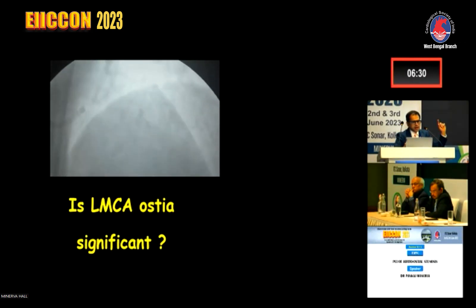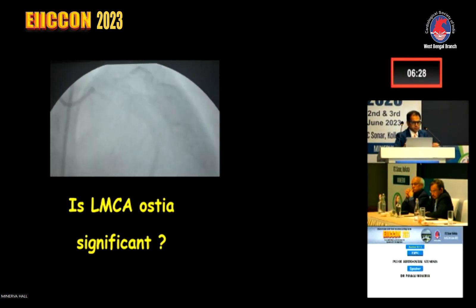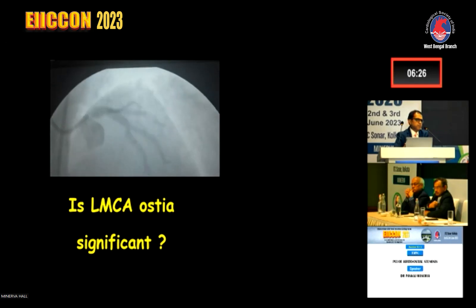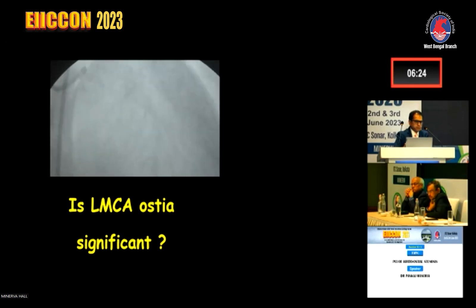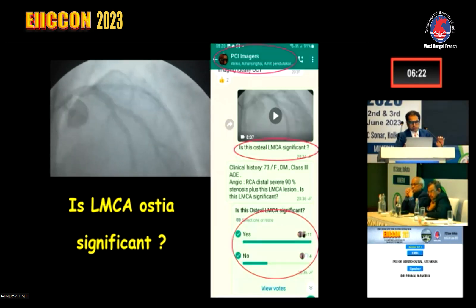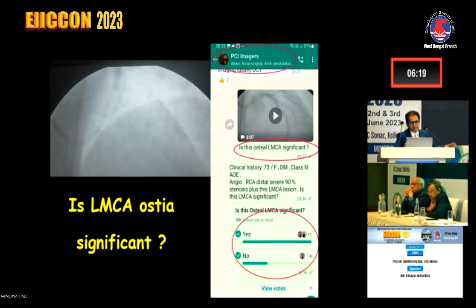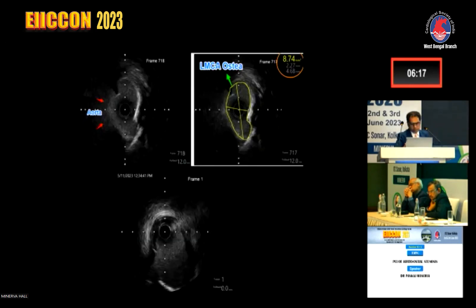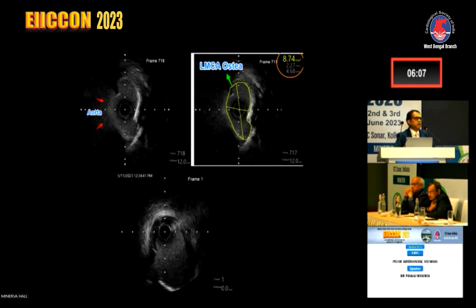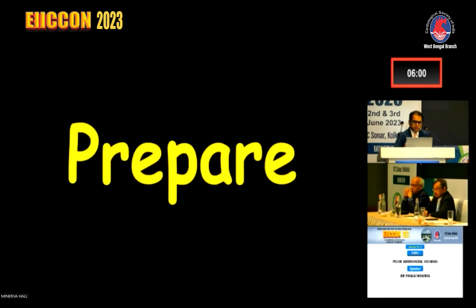The last defining case: again a borderline LMC ostial lesion. I posted this image in our imaging group and 11 out of 15 votes said it was significant based on angiography. But when we did IVUS, we found the lesion was not significant — the MLA was 8.74. So almost all faculty felt it was significant angiographically, but imaging showed it was not. Imaging is a must to define these aorto-ostial lesions.